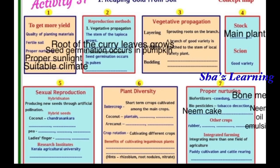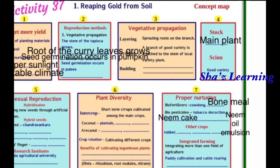Proper nurturing involves two types: bio fertilizers and biopesticides. Bio fertilizers include cowdung, compost, and others. Biopesticides include tobacco, neem oil emulsion, neem cake, and so on.